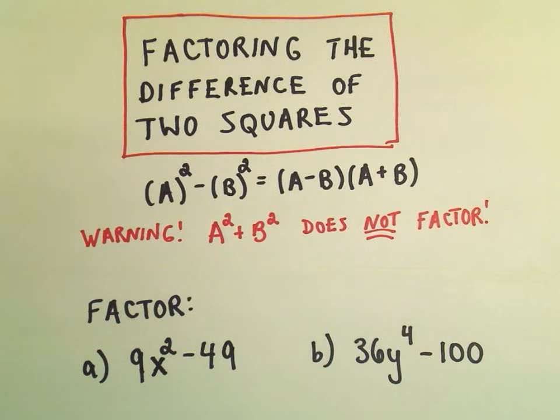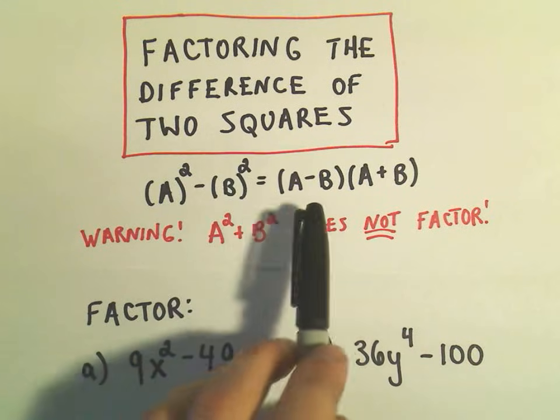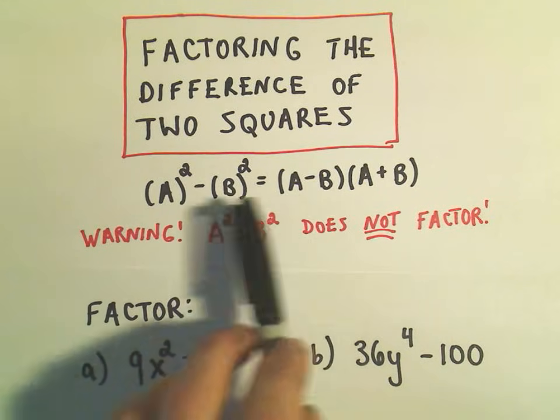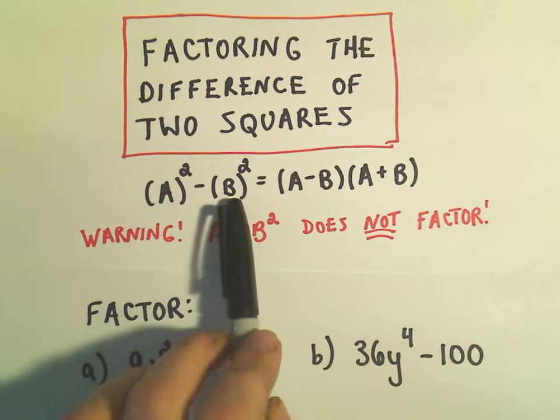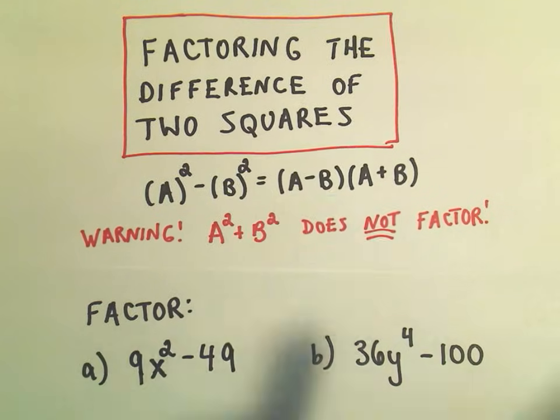In this video I'm going to do some examples about factoring the difference of two squares. Sometimes people will say it's factoring the difference of two perfect squares. The formula that we're going to use basically says if you have something squared minus something squared, you can put that in parentheses by just taking the things that are being squared, and one set of parentheses make it a minus, and the other set make it a plus. That's all you've got to do.